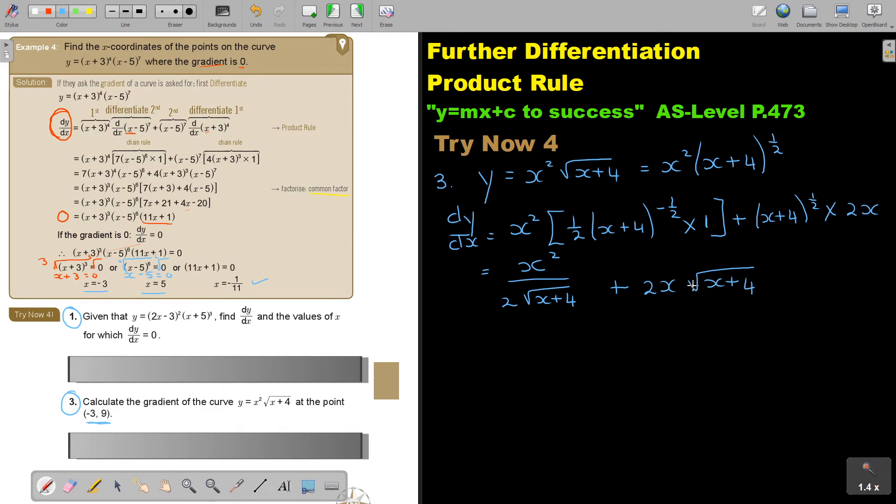Now I could have made the denominators the same if the gradient were given to me. But in this case, it's just going to be substitution. Because we are just going to say when x is equal to negative 3, because the point, what is the point? The point is negative 3 and 9. Now to find the gradient, we just substitute the x value in the derivative function, in the differentiated function. We ignore the 9, we don't need that.